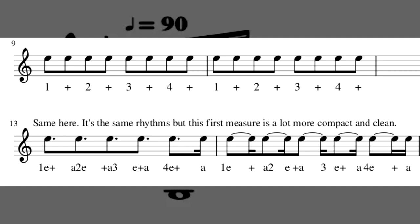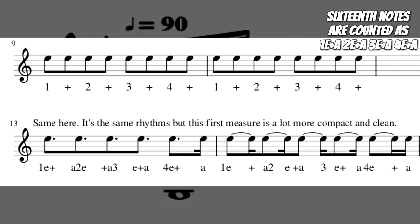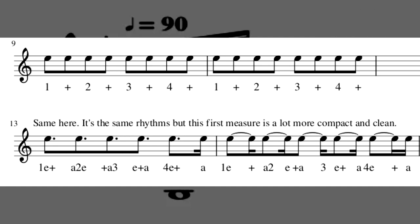When we put a dot next to an eighth note in 4-4, however, we're holding that note out for three quarters of a beat, since an eighth note is counted as half of one beat in 4-4. So it feels very uneven.